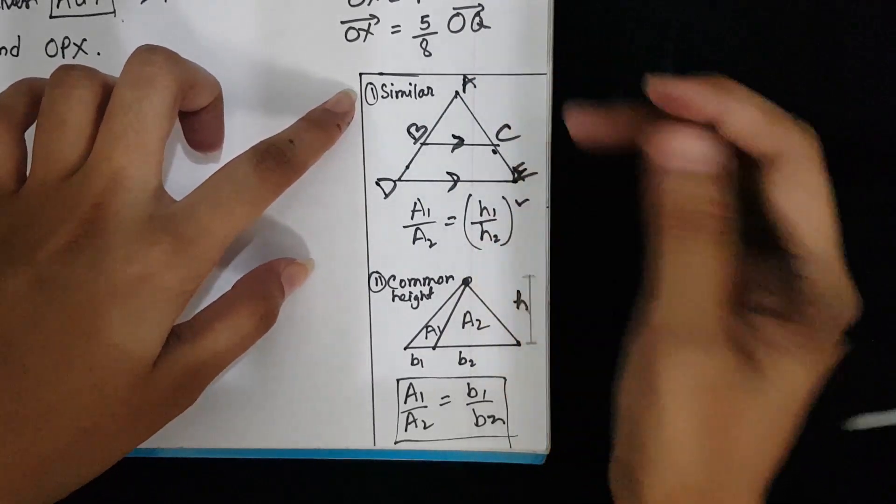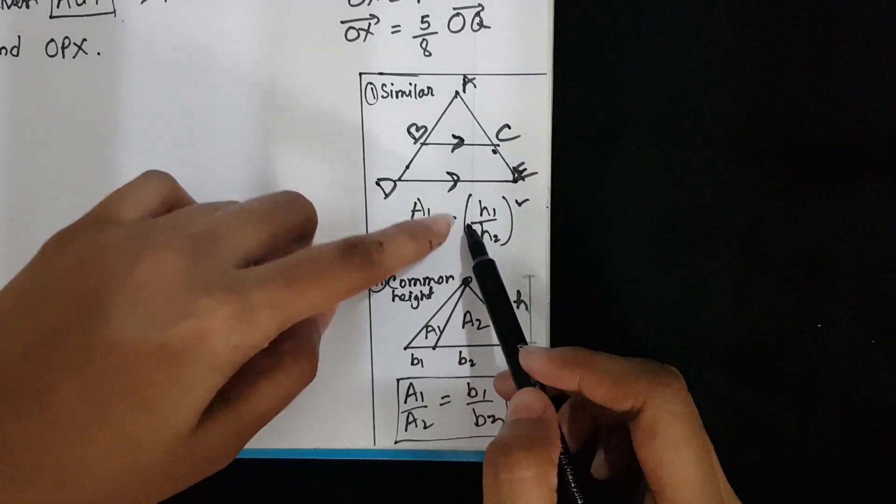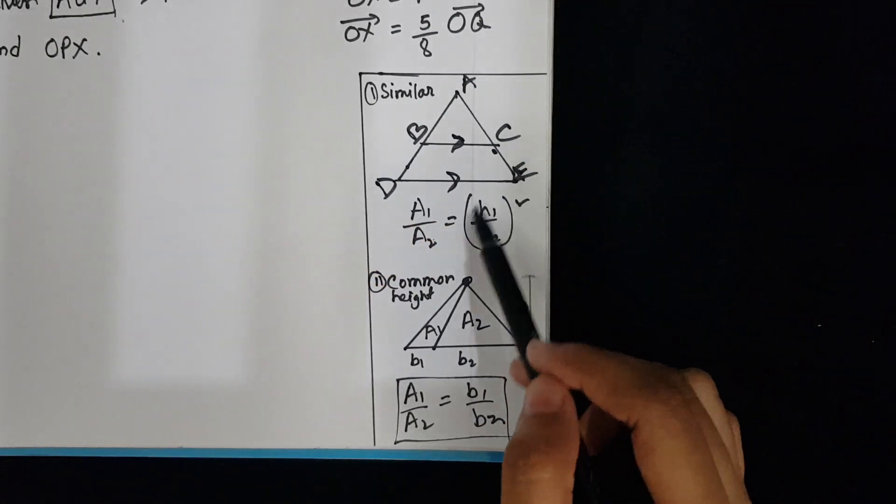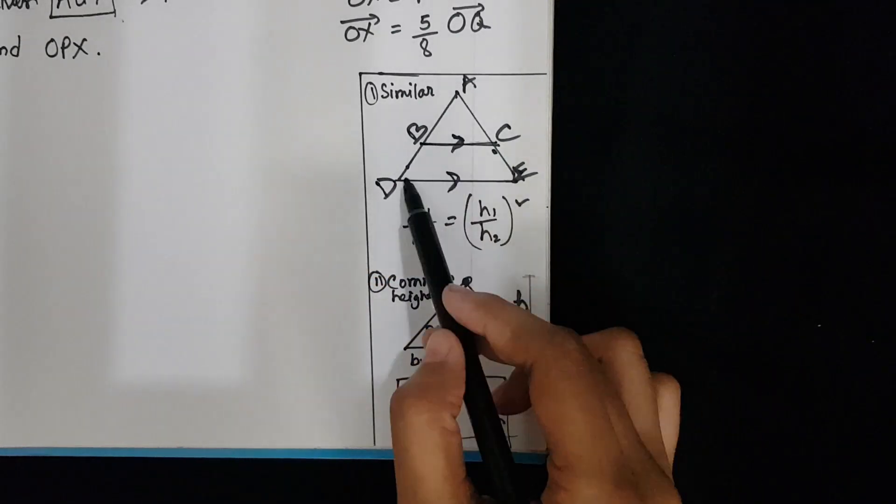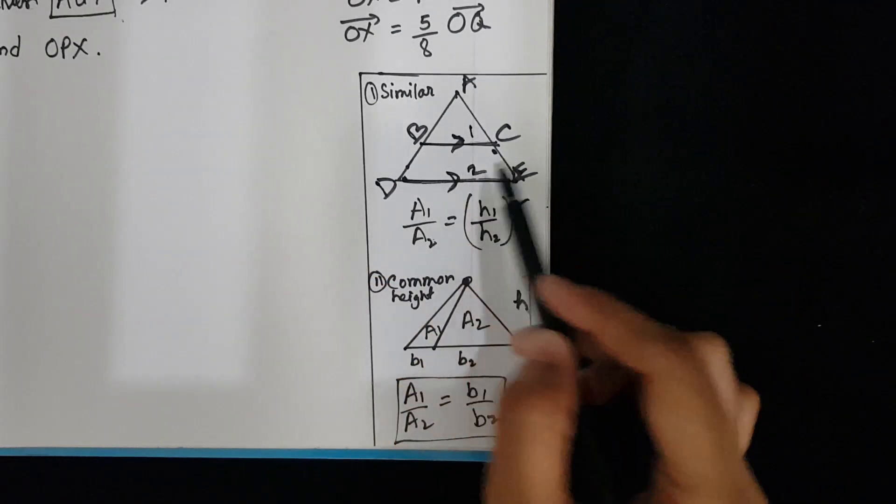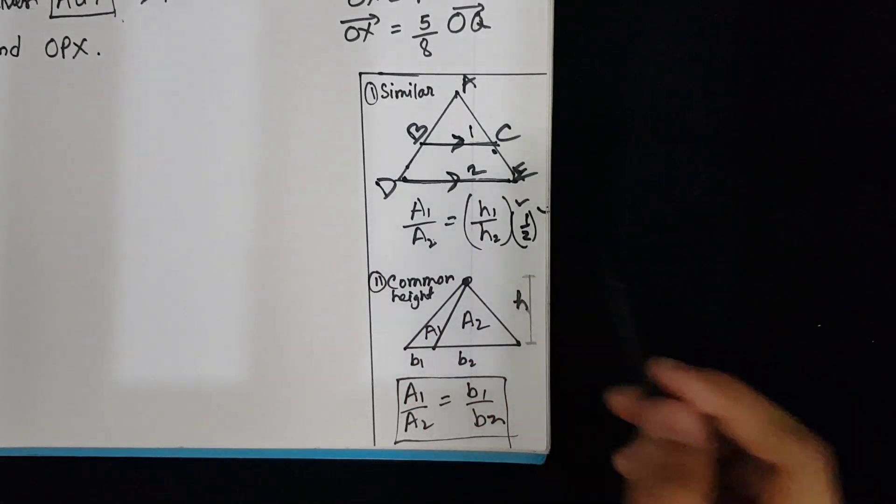For two similar triangles, the area ratio will be equal to the square of the side ratios. For example, BC is to DE. If BC to DE is 1 to 2, then the area ratio will be 1 to 4.